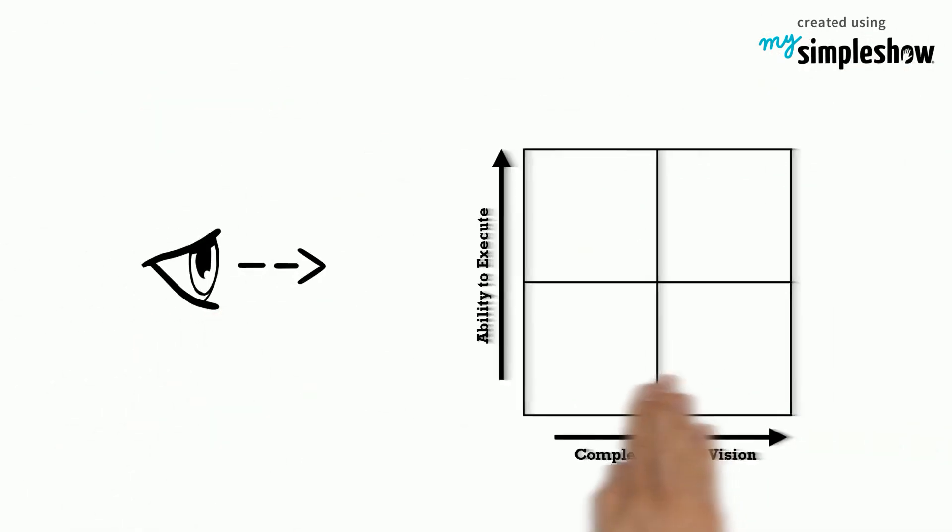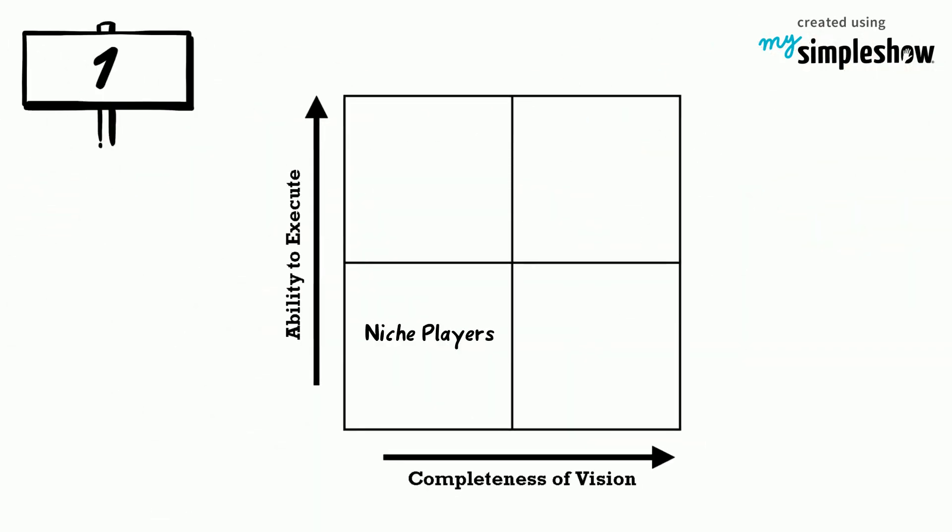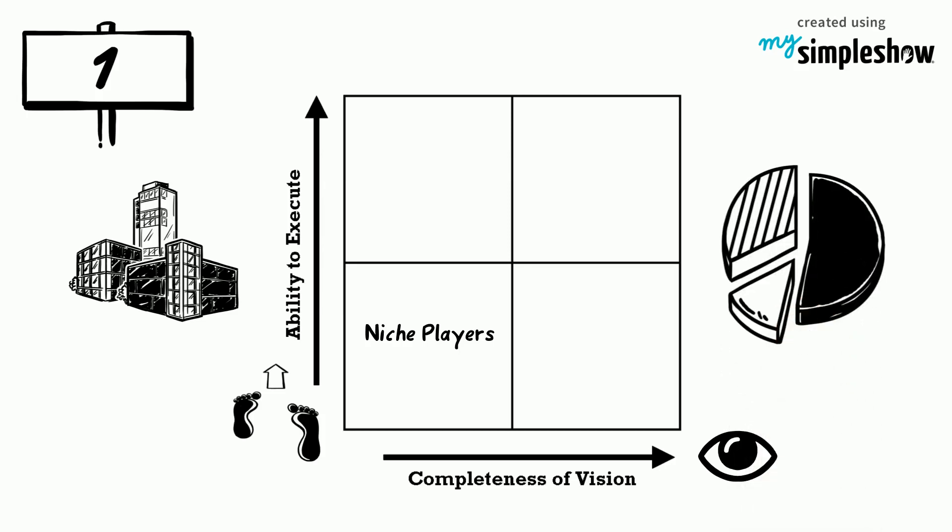Let's look at these four distinct sections. 1. The niche players are companies that score low in both completeness of vision and ability to execute. They do well in a segment of the market but cannot outperform larger vendors.